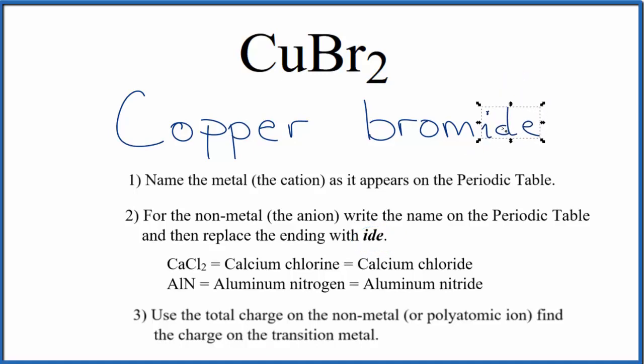That gives us copper bromide as the name for CuBr2, but copper is a transition metal, so we need to show the charge of copper in the name.